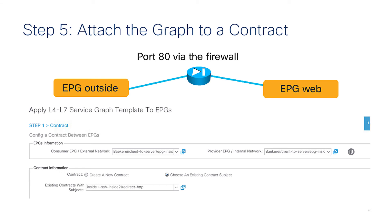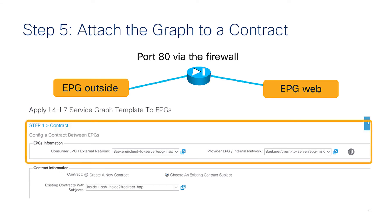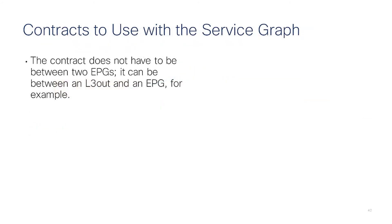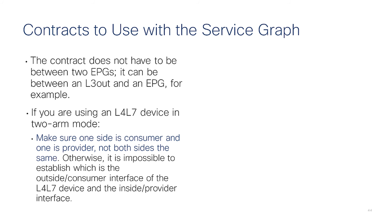When applying a contract, you choose the external network or consumer EPG and the internal or provider EPG, then select an existing contract subject. The contract can also be between a layer 3 out and an EPG. In a two-arm deployment with outside and inside interfaces, make sure one side is consumer and one is provider. If an EPG both provides and consumes the same contract, ACI will not know which is the consumer-side versus provider-side service bridge domain.